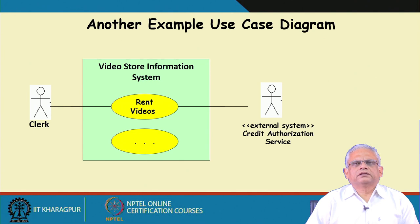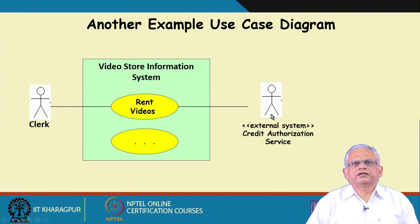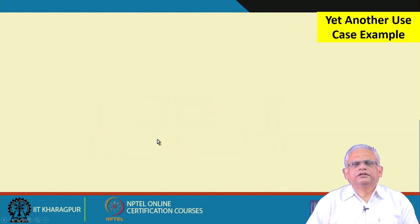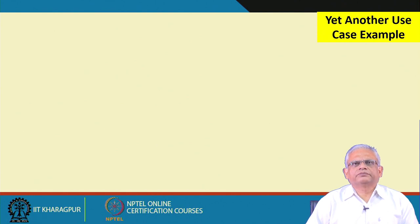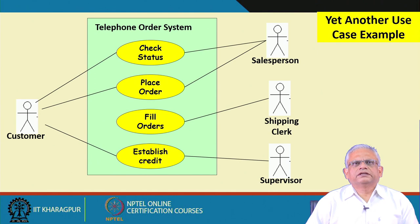The clerk then asks the customer to make payment for the video, takes the card from the user, and tries to make payment. There is an external system called the Credit Authorization Service. As the card is given, it tries to authenticate the card using the Credit Authorization Service. There are other use cases which are not indicated here.